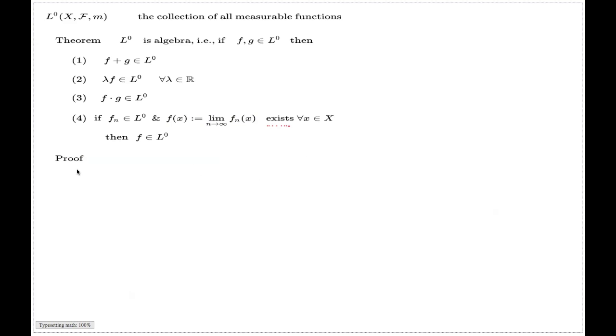So in fact L^0 is an algebra which is closed on pointwise convergence, given that functions converge. I have a proof for that. Part one is based on the following identity between sets. I claim that the set where f+g bigger than c can be represented as a countable union across all rational numbers r such that f bigger than r and g bigger than c minus r.